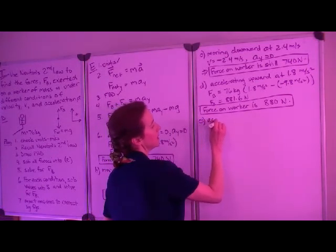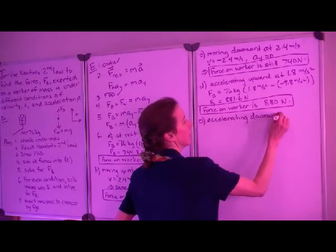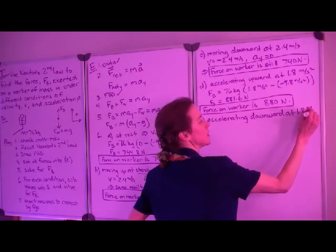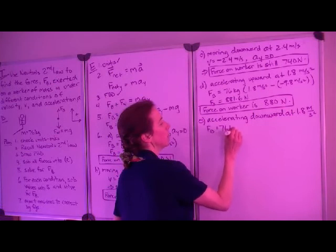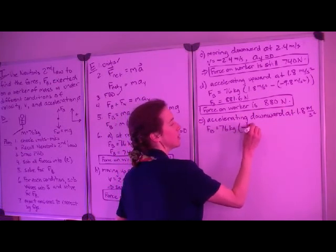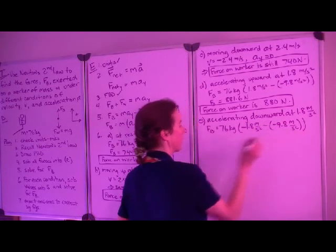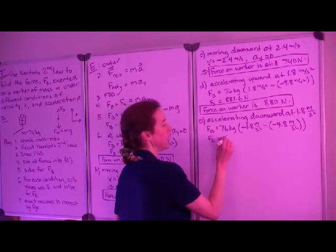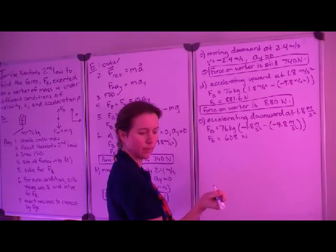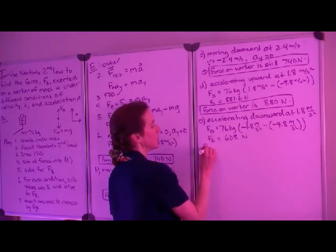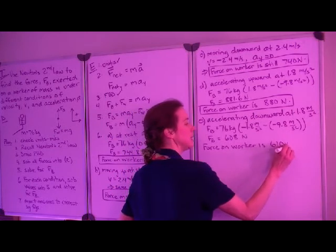In part E, we are told the bucket is accelerating downward at 1.8 meters per second squared. When we substitute into our equation for the force of the bucket on the worker, we have a negative acceleration minus the gravitational acceleration. This time we get that the force of the bucket on the worker is 608 Newtons, and we report that to two significant digits as 610 Newtons.